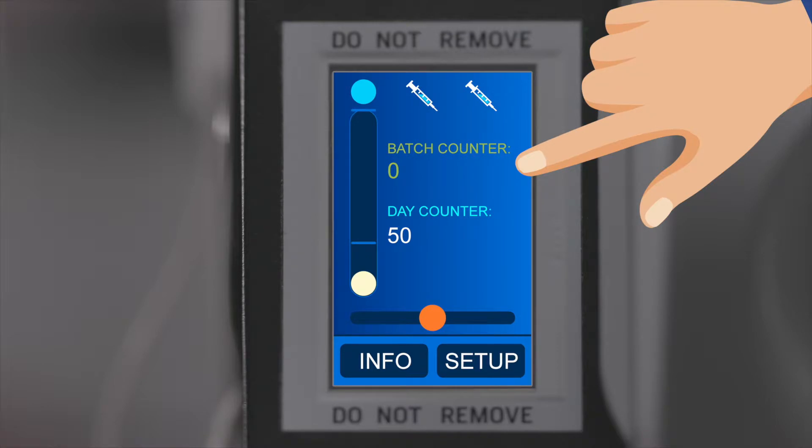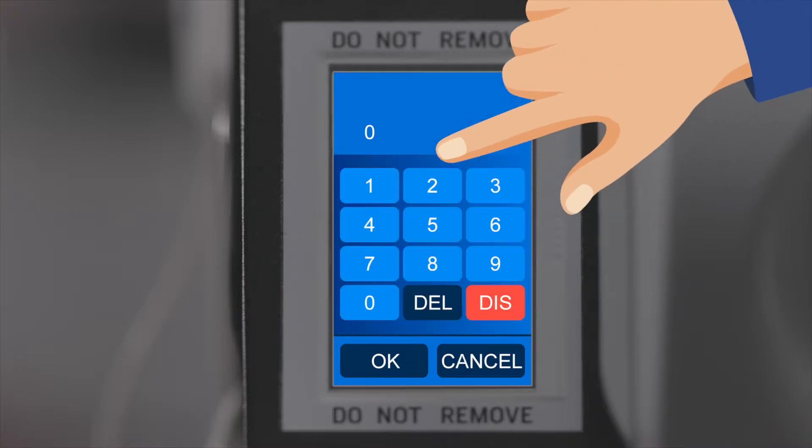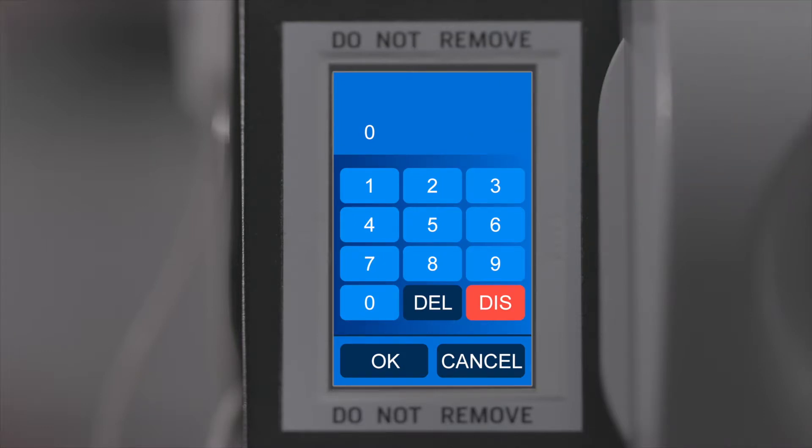Batch Counter indicates the number of chickens vaccinated in accordance to the batch size. Please note that this function is switched off when the batch counter is set to 0. By pressing the batch counter you can adjust to the desired number.